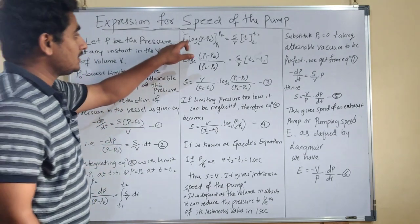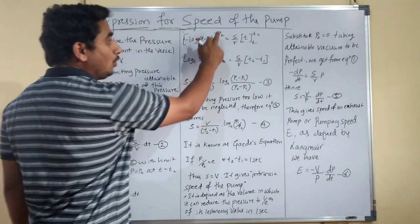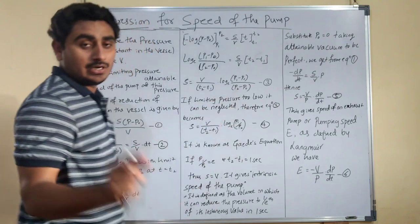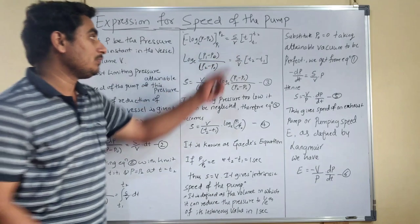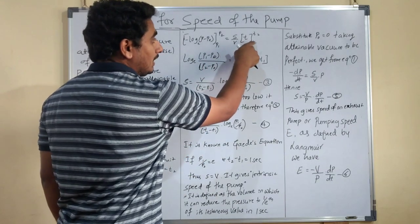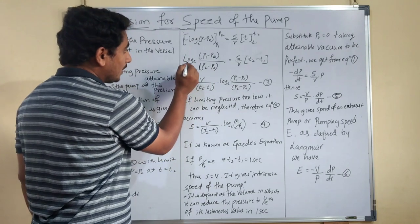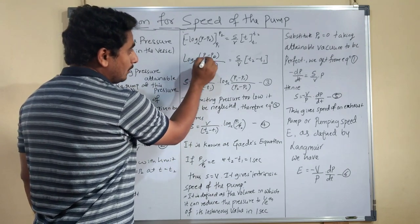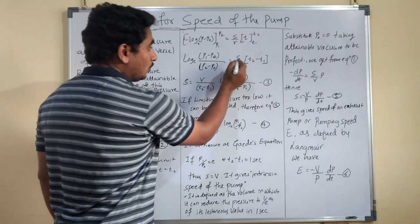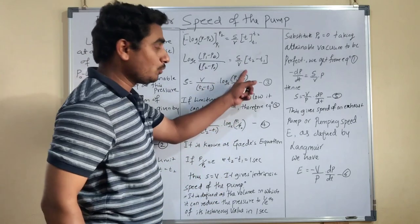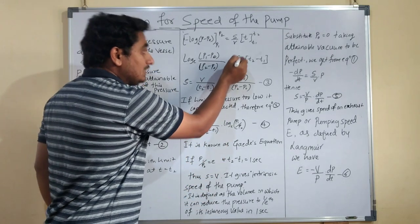After integration, with the minus sign retained, we get: minus log(P − P0) evaluated from P1 to P2, and S/V is a constant taken outside, so integrating dt gives t evaluated from t1 to t2. Applying the limits, we get: log(P1 − P0)/(P2 − P0) = (S/V)(t2 − t1).